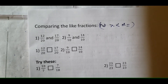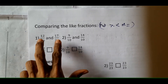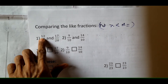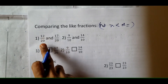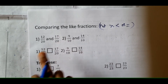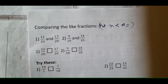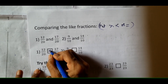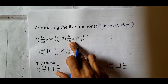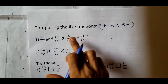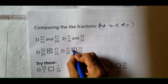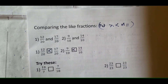Next is comparing like fractions. Fractions having the same denominator are like fractions. To compare them, compare the numerators — the greater the numerator, the greater the fraction. Compare 12 upon 20 and 17 upon 20 — 17 upon 20 is greater than 12 upon 20 because 17 is greater than 12. For the second question, 9 upon 10 and 14 upon 10 — 14 is greater than 9, so 14 upon 10 is greater. I have given you two questions — try these two.